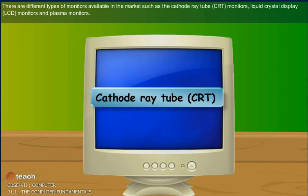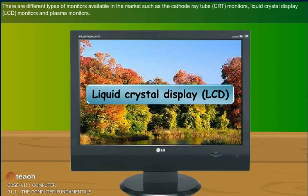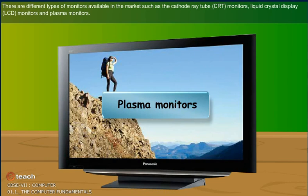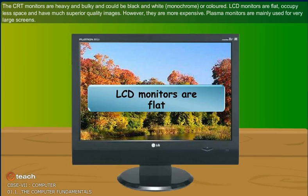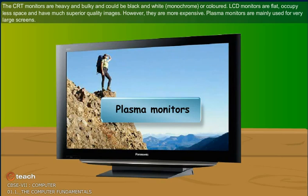There are different types of monitors available in the market such as the cathode ray tube (CRT) monitors, liquid crystal display (LCD) monitors, and plasma monitors. The CRT monitors are heavy and bulky and could be black and white, monochrome or colored. LCD monitors are flat, occupy less space and have much superior quality images. However, they are more expensive. Plasma monitors are mainly used for very large screens.